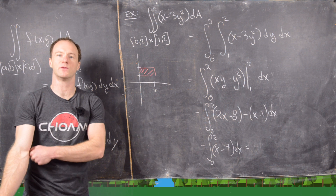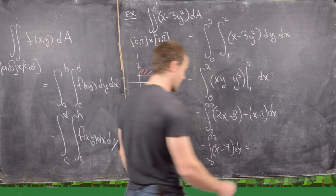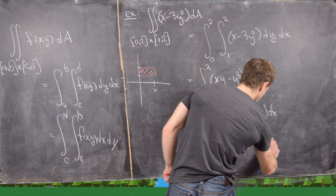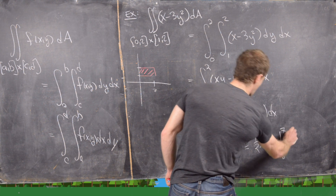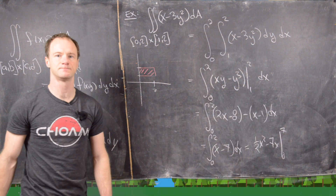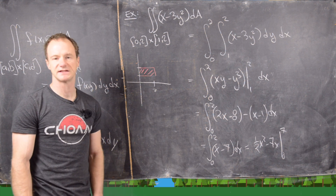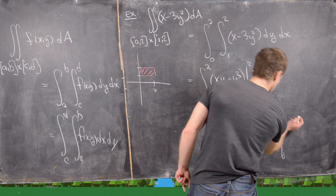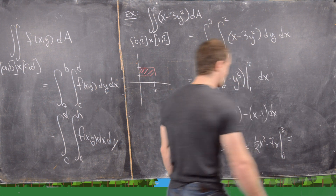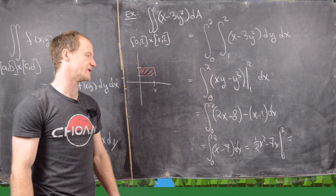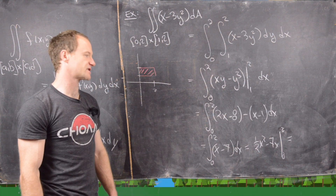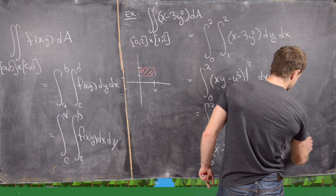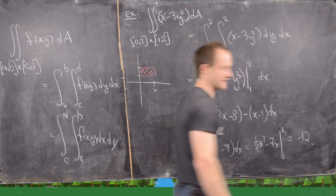This is pretty simple. We take the antiderivative with respect to x: that's one-half x squared minus 7x, evaluated between 0 and 2. Plugging in 0 gives 0. Plugging in 2 gives 4 over 2 minus 14, which is 2 minus 14. So we get minus 12 as the answer.